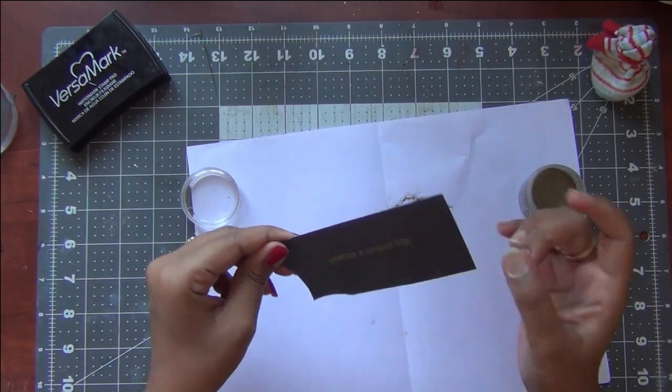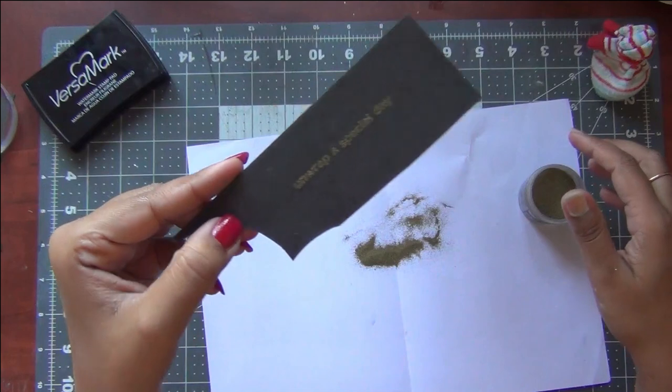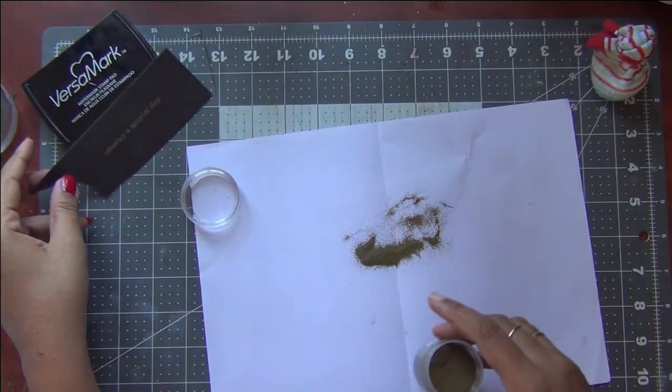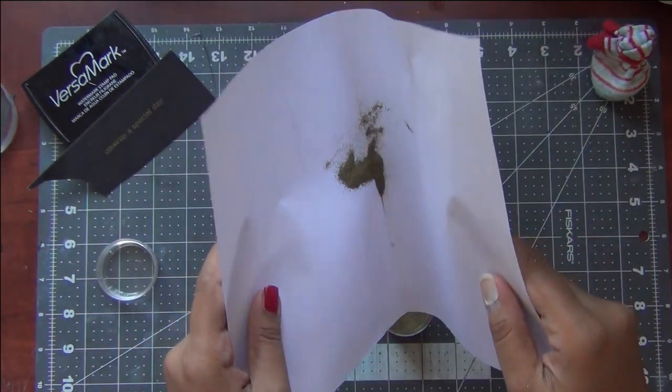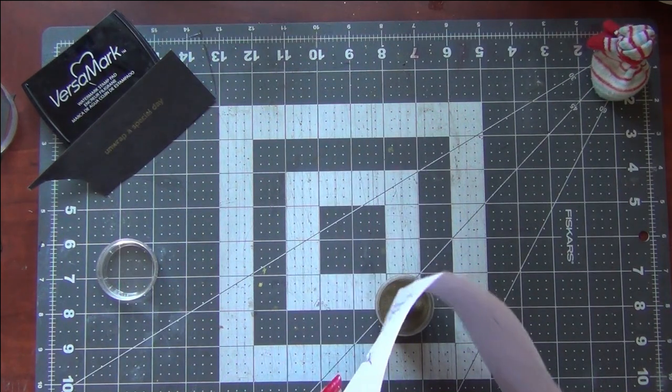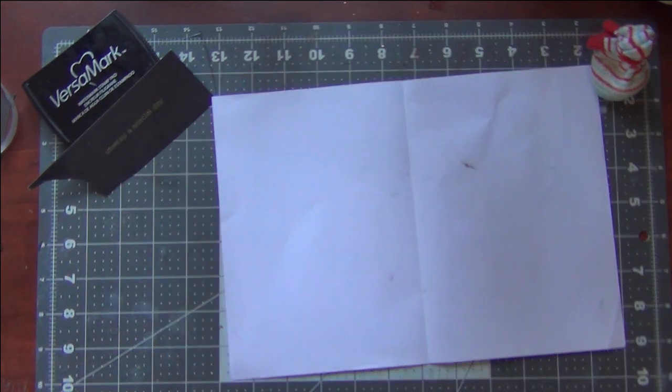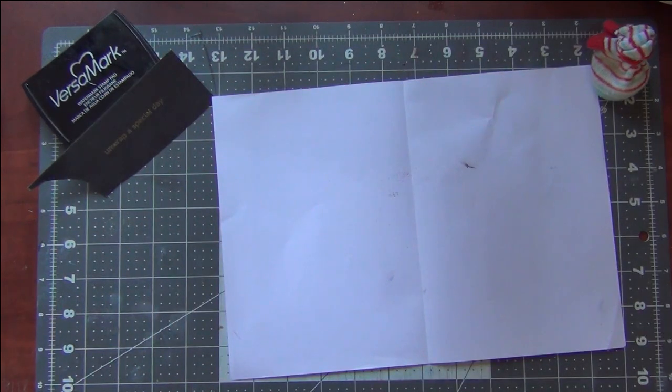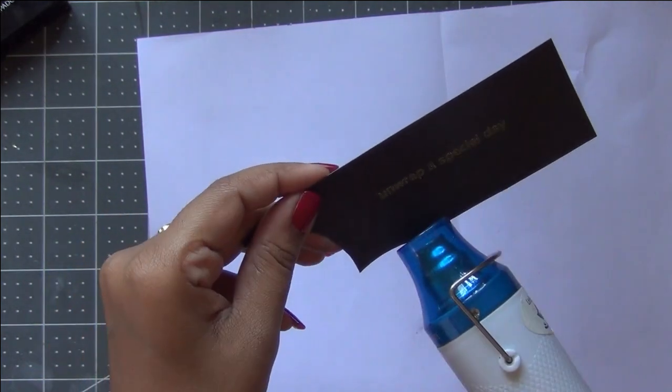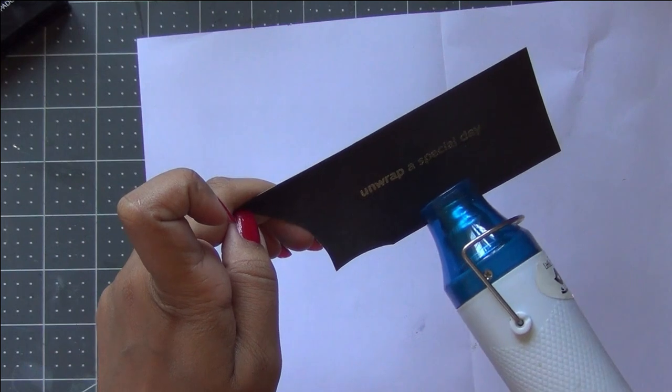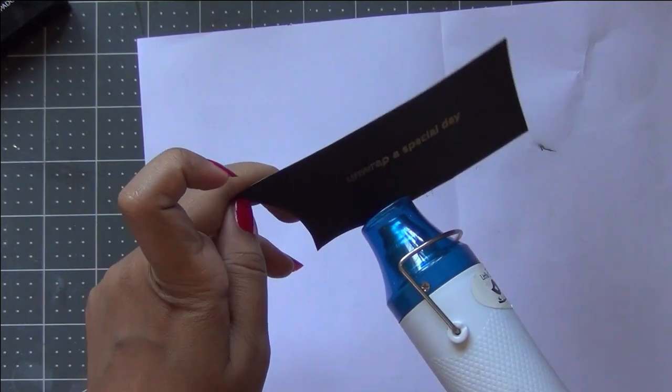As you can see, there is absolutely no excess embossing powder on our cardstock, and our DIY embossing pouch is working perfectly. I am now collecting the embossing powder back into my container. I have heated my heat gun and now I am heating the sentiment to see how it really works. As you can see, there is no excess embossing powder sticking on the cardstock, and there is perfect embossing.